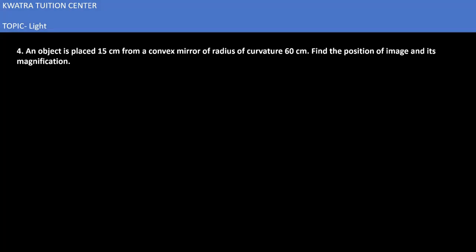Let's start with the fourth one. In this it says an object is placed 15 cm from a convex mirror of radius of curvature 60 cm. Find the position of image and its magnification. So u is given as minus 15 cm.